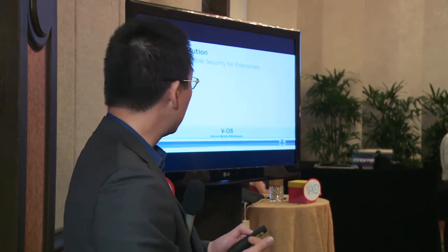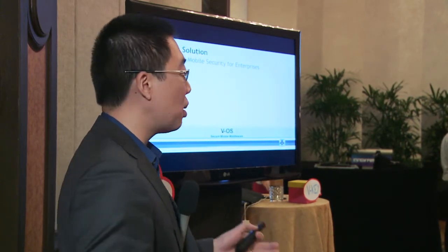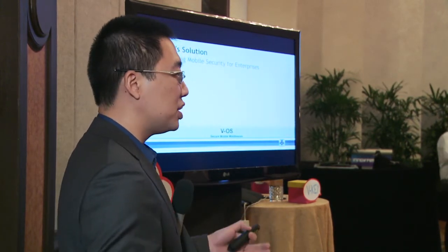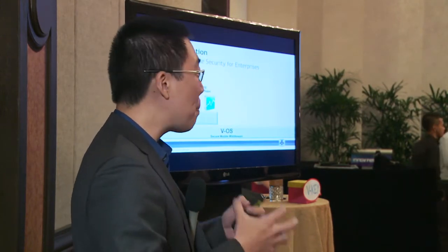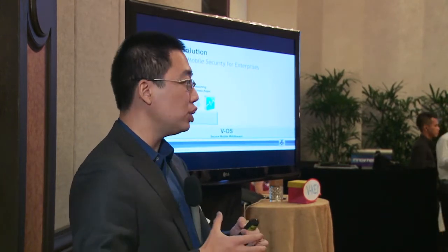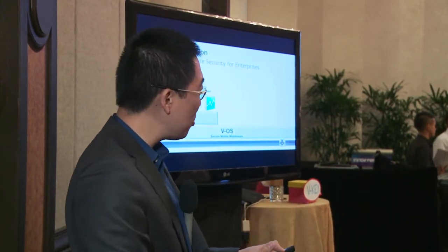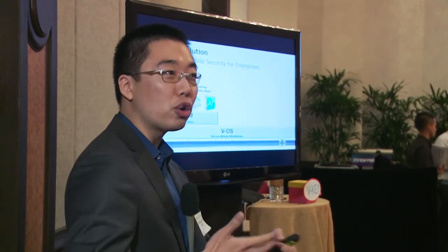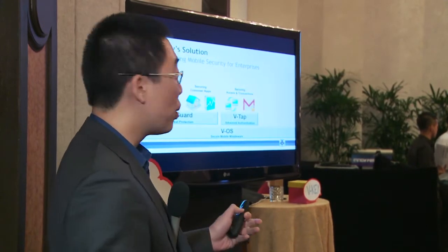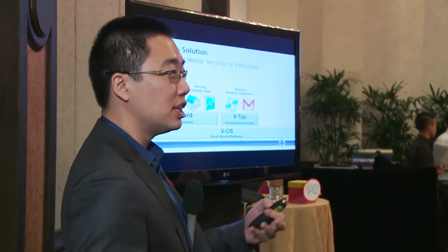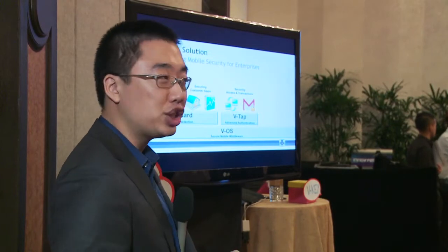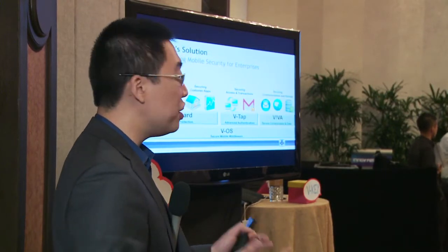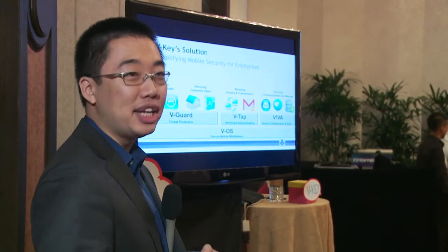The foundation of everything we do is our VOS, which is a secure mobile middleware for your enterprise application. VGuard is our wrapper for your application, either a binary source code or your website. We can wrap either in-house enterprise applications or consumer-facing applications. We have VTAP, which is a secure authentication application for securing access and transactions. And we have Viva, which is for secure collaboration and data.